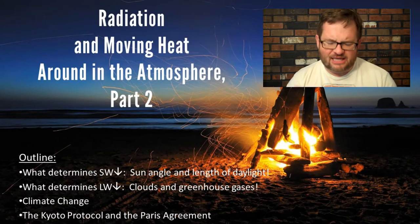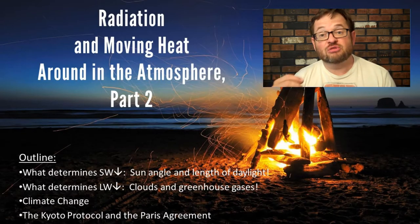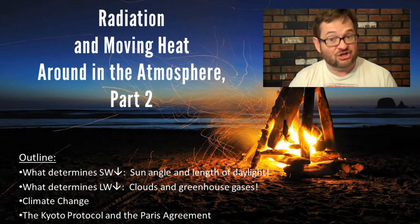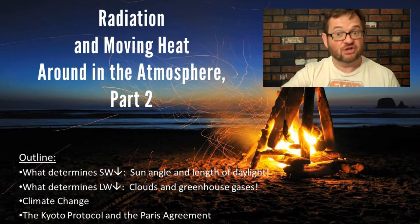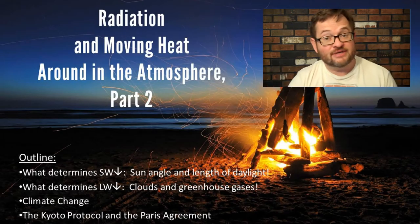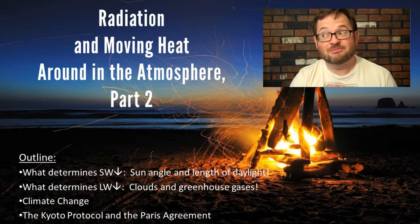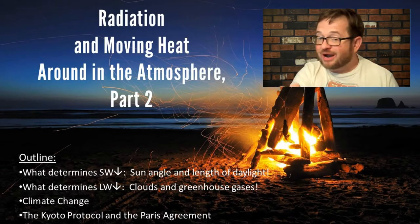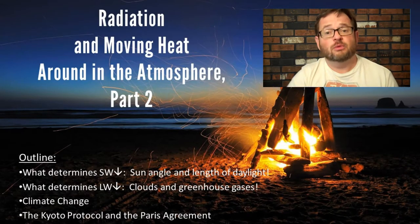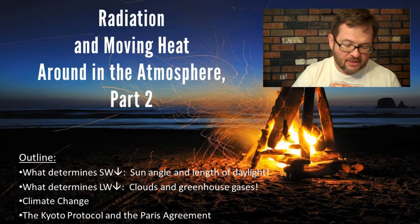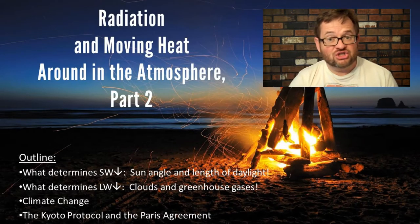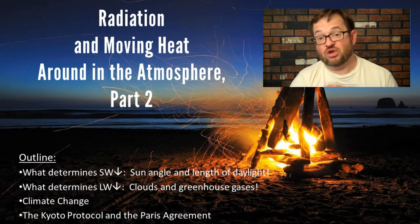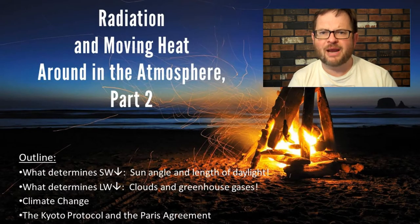We're going to be talking in this lecture about what's determining the amount of shortwave down — solar radiation — that actually makes it to the surface of the Earth. And we're going to talk about what determines the amount of longwave down, the longwave radiation that comes from the sky and reaches the surface. Both longwave down and shortwave down refer to at the surface of the Earth. We're also going to use that information to talk about things like climate change, the Kyoto Protocol, and the much newer Paris Agreement.